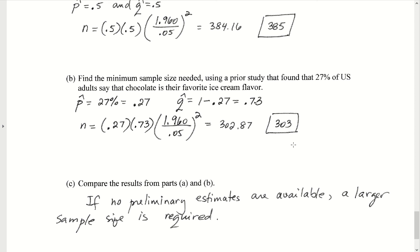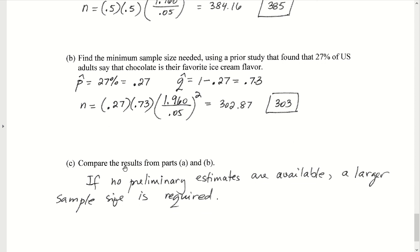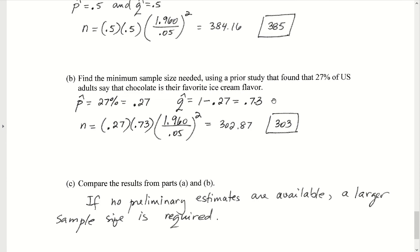In terms of comparing the difference between part A and part B, by having preliminary information ahead of time, that reduces the size of the sample that's going to be needed for the same level of confidence. If you don't have that preliminary information, then you have to have a larger sample size in order to guarantee the same level of confidence in our interval estimates.